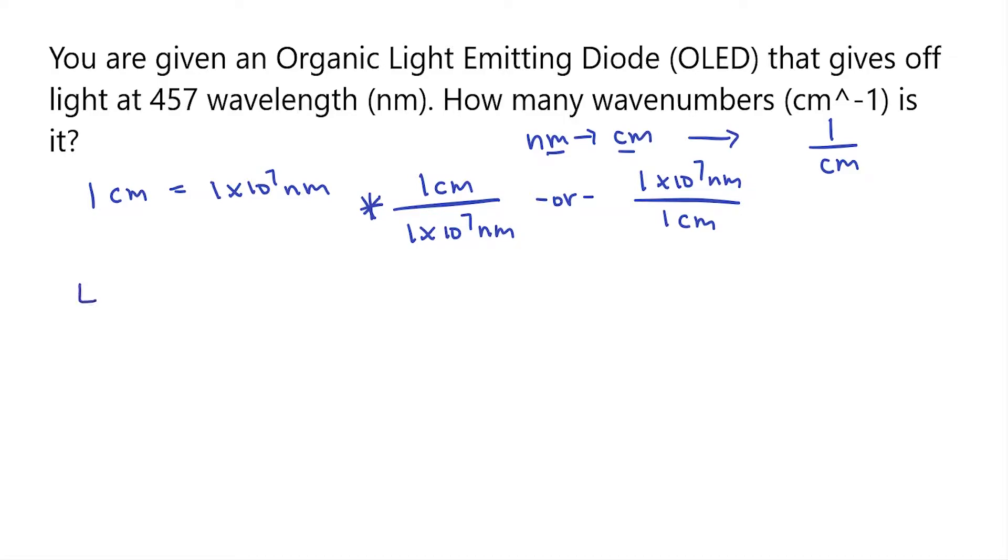Now, let's set up the problem. I have my 457 nanometers next to my fraction, which is 1 centimeter over 1 times 10 to the 7 nanometers.